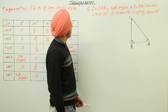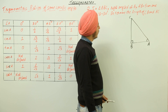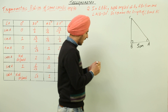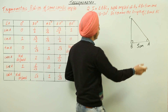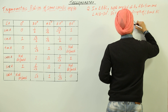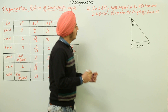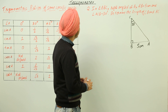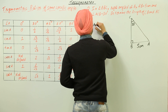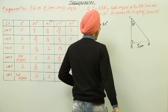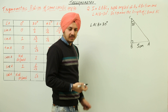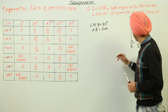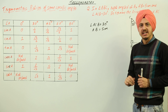Now for the question: in triangle ABC right-angled at B, AB is equal to 5 centimeters and angle ACB is equal to 30°. We have to determine the lengths of CB and AC. We are given angle ACB = 30° and AB = 5 cm, and using these we have to calculate the lengths of BC and AC.